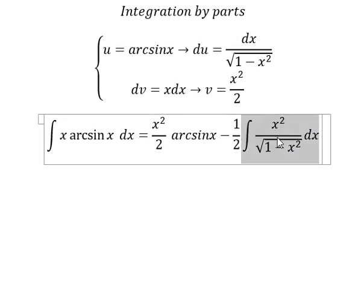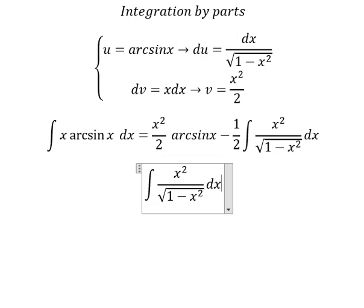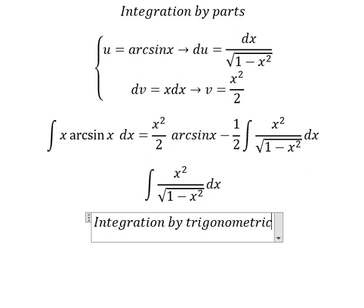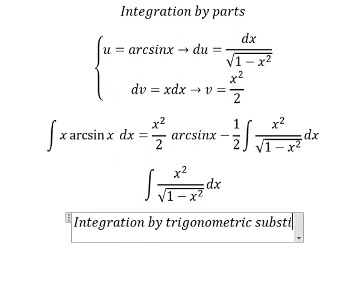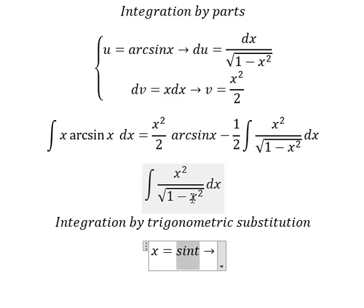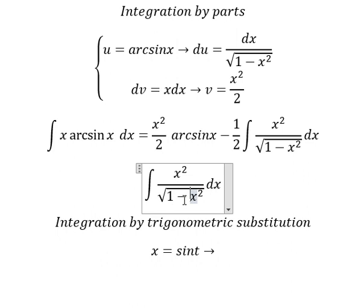Now we need to focus on this integral. We need to use trigonometric substitution. I will put s equals sin(T), because if we substitute, one minus sin²(T) becomes cos²(T). We can then simplify the square root.